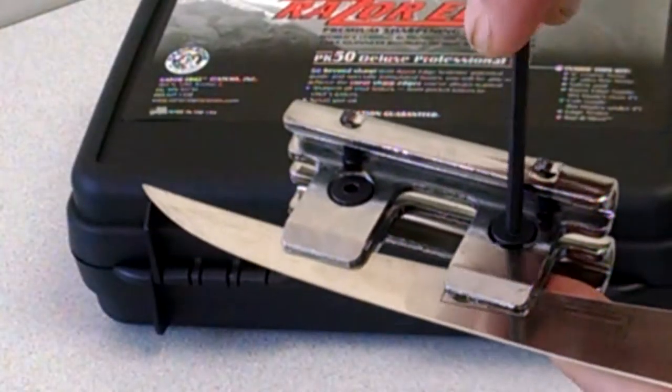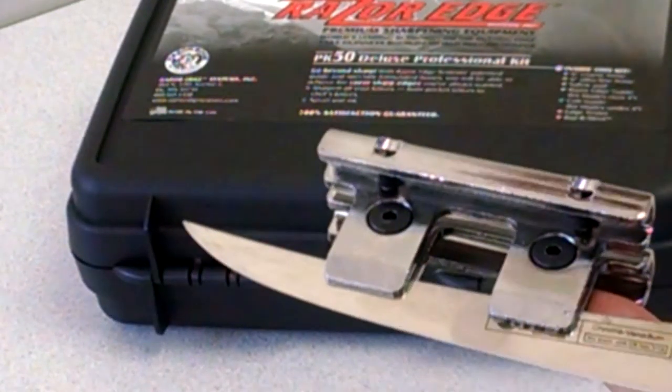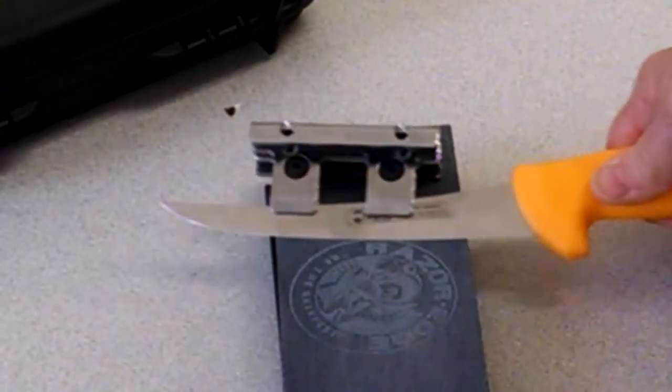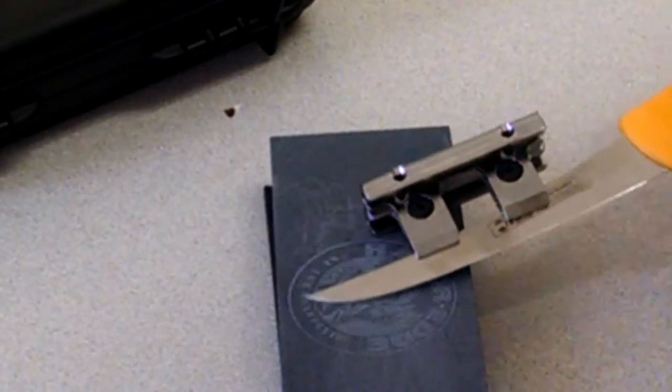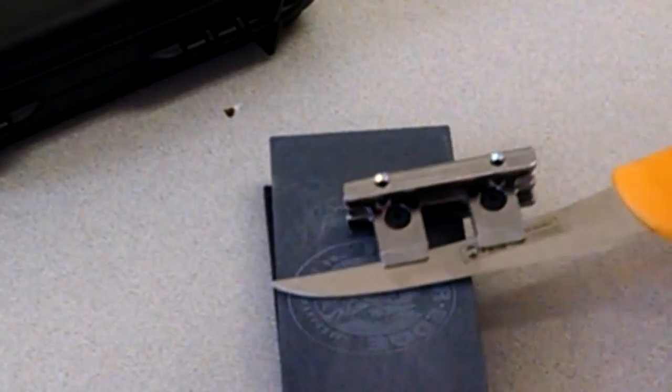Longer blades can be sharpened in two sections by simply moving the guide. Start with the coarse hone to remove unnecessary metal from the cutting edge. Circular or back-and-forth motions work equally well.